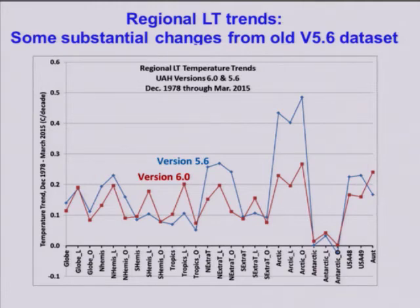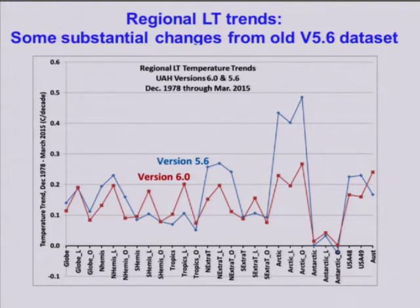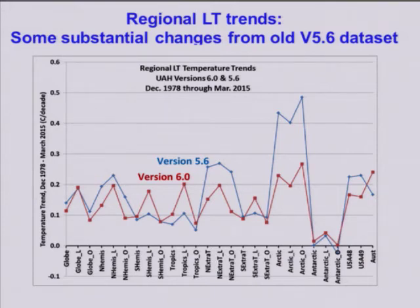This plot shows trends for different locations — the left end is global trends, then global land, global ocean. This shows how the trends in our old version 5.6 have changed with new version 6. There are some pretty big changes, like in the Arctic — the new version 6 has basically cut the warming trend in the Arctic in half. The Antarctic is the only region which basically shows no warming trend at all, which is qualitatively consistent with the fact that sea ice around Antarctica has actually been increasing. But these numbers are very uncertain because of difficulties measuring around Antarctica and elevated ice sheets.